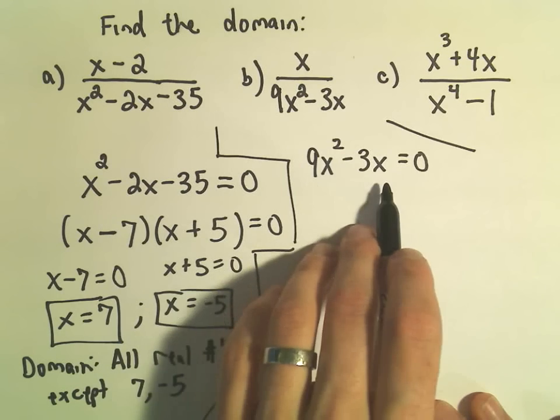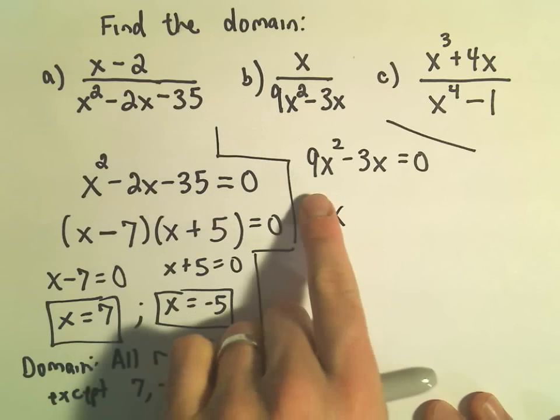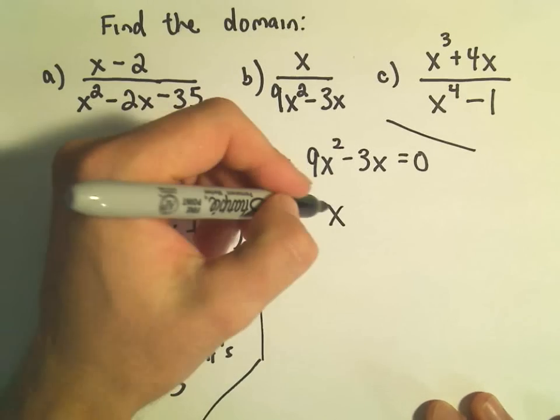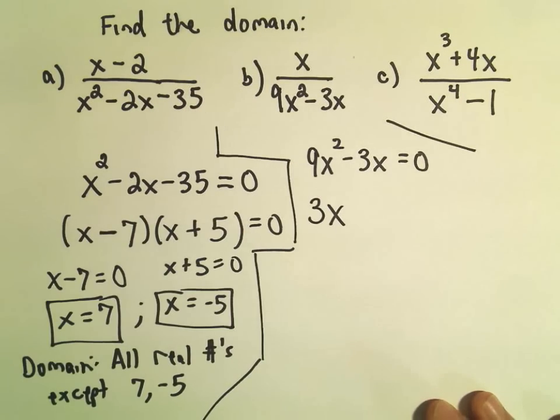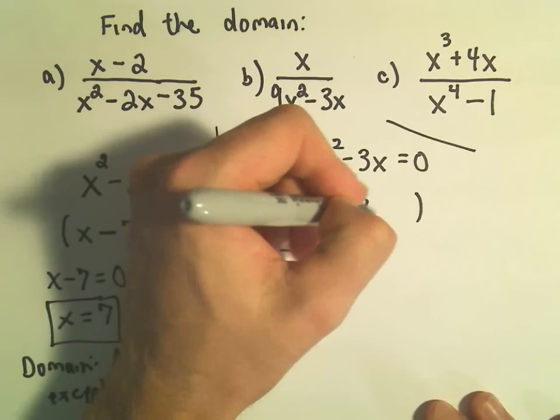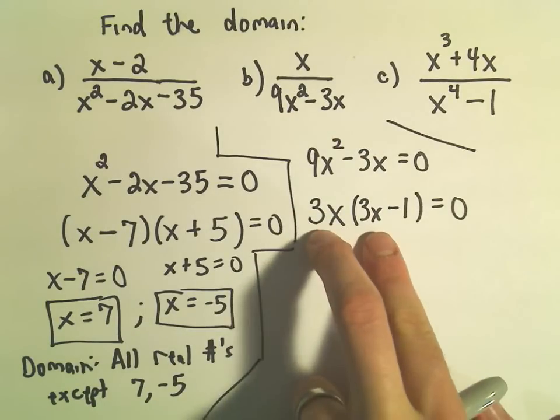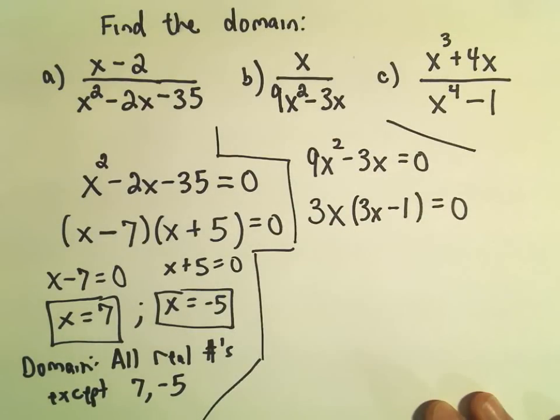So for this quadratic, I notice there's no constant, so I can certainly factor out an x. And also, there's a 9 and a 3. Well, I could factor out the greatest common factor, which is 3. And then I guess in parentheses, I would need a 3x back, and then a negative 1. So if we multiply that out, we would get 9x² - 3x.